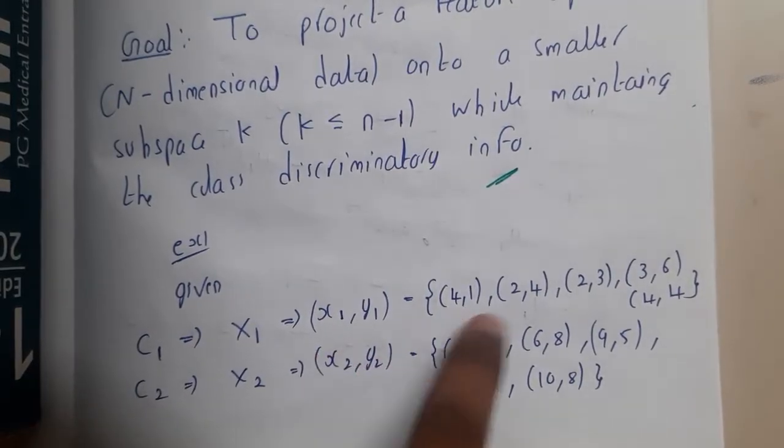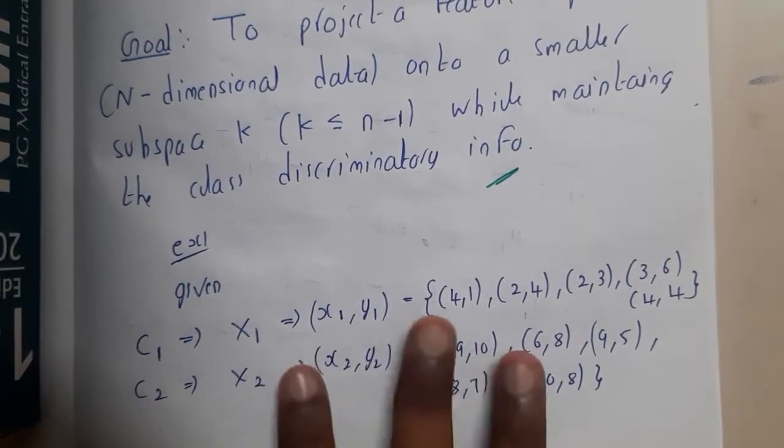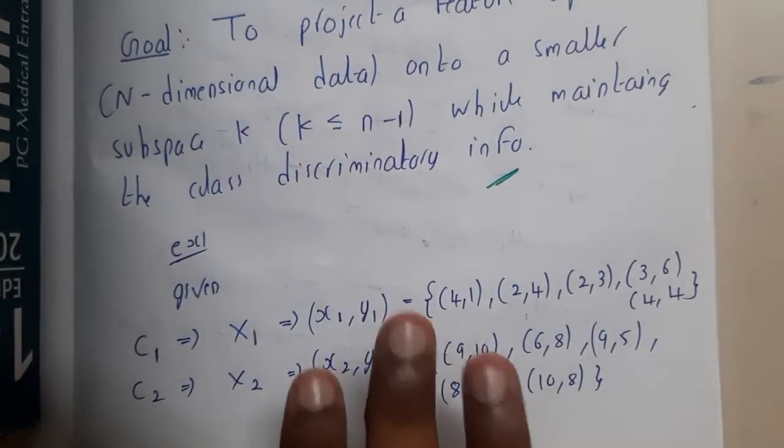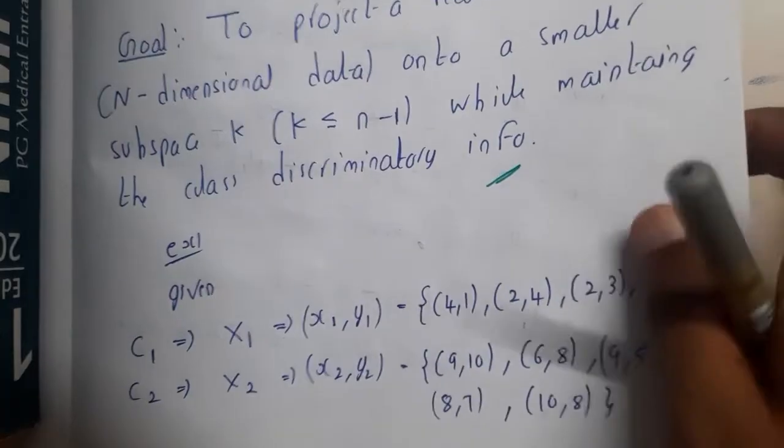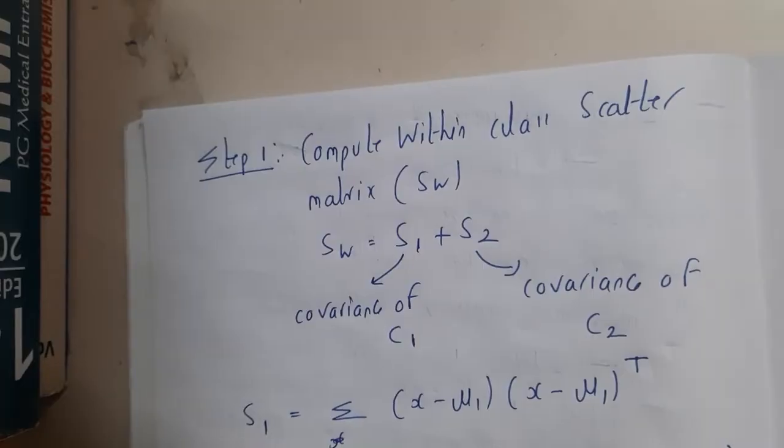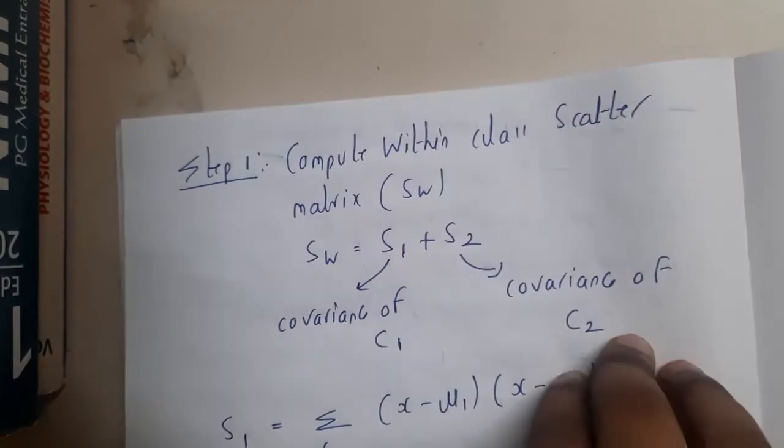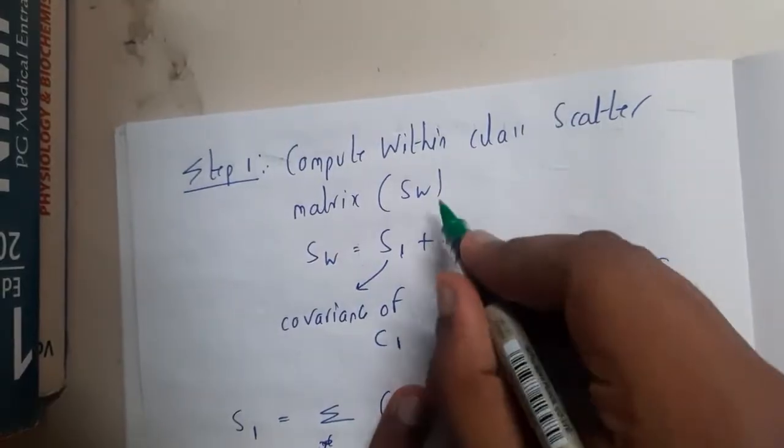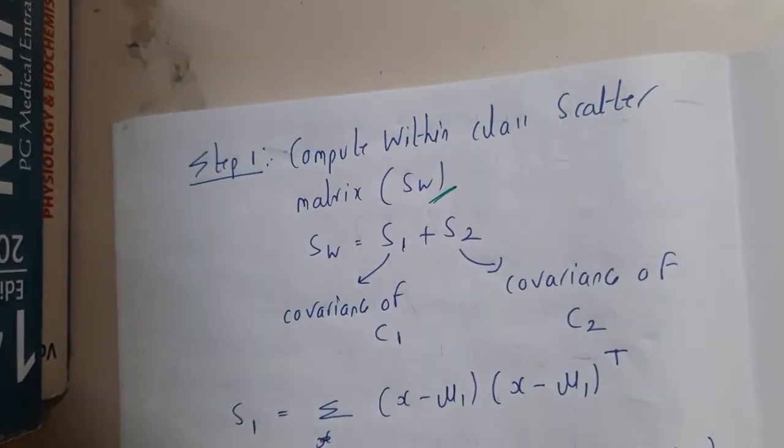Assume that the given data set we are having two classes, C1 and C2, with x1 and x2 values. I also don't have that much clear idea like why we are solving in this way, so I'll be just going through the method. You can just practice it once and remember the steps because the method is not having that much clarity.